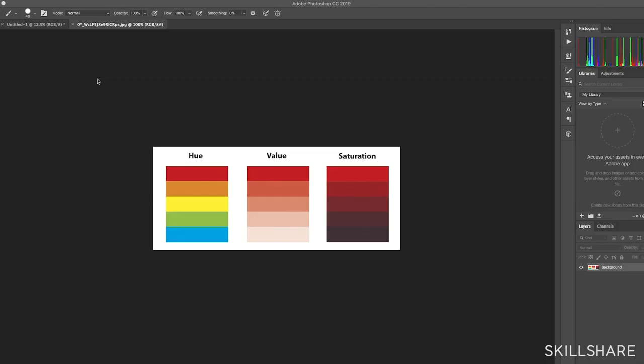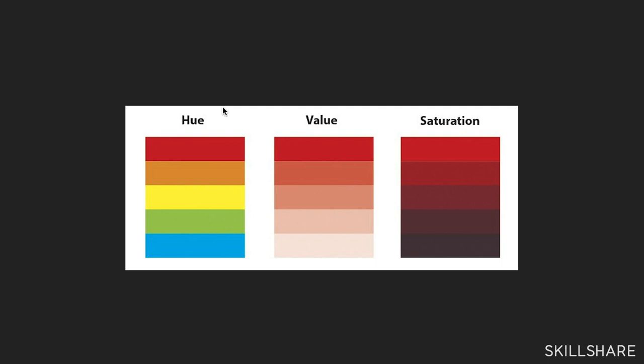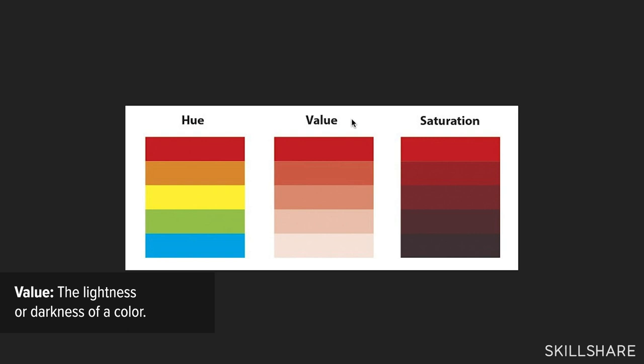Let's review the key terminologies so we can all be on the same page. We have hue, value, and saturation — the most commonly used terms in color discussion. Hue is essentially just color — different hues mean different colors. Value means the different shades of color, like lighter or darker. Saturation essentially means how pure, how intense, and how chromatic a color is.